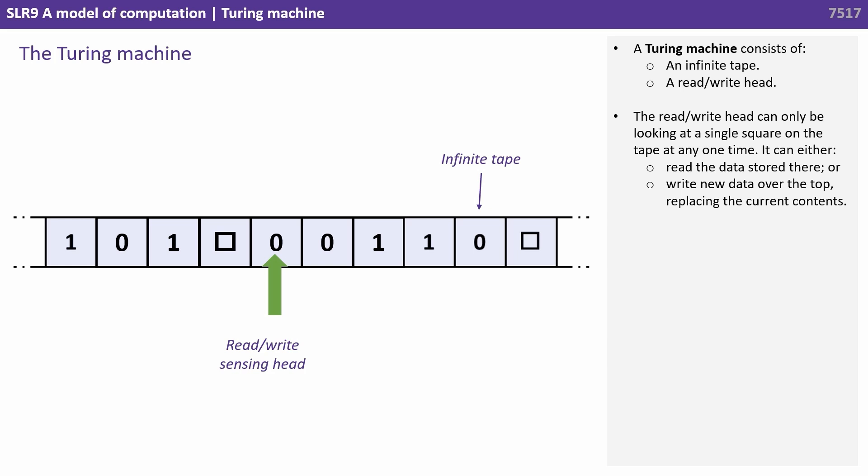The Turing machine consists of a read-write head. The read-write head can only be looking at a single square on the tape at any one time. It can either read the data stored there, or write new data over the top, replacing the current contents.